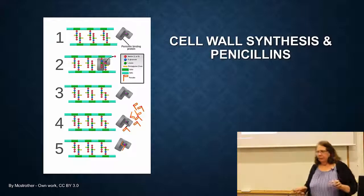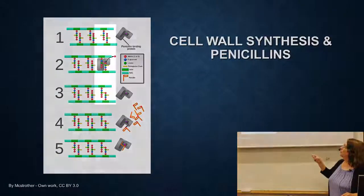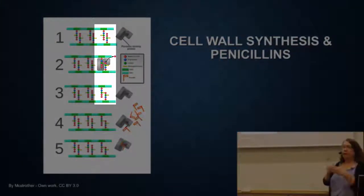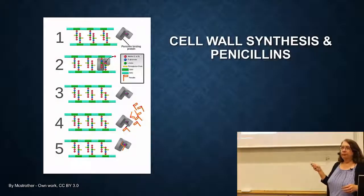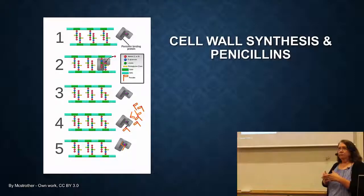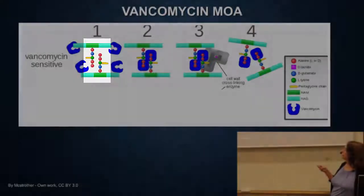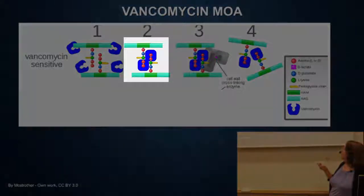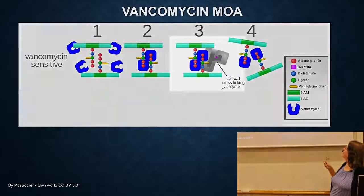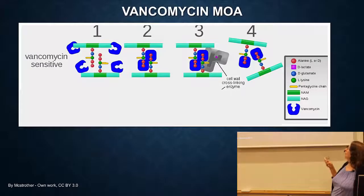In the cell wall, the peptidoglycan has two peptides that have to be cross-linked together by an enzyme called penicillin-binding protein. Penicillins work by binding the enzyme and preventing it from binding. Vancomycin works differently — it binds to the peptides themselves, so the enzyme that needs to do the cross-linking isn't able to bind there anymore. Over time, the cell gets big holes in the peptidoglycan and bursts.